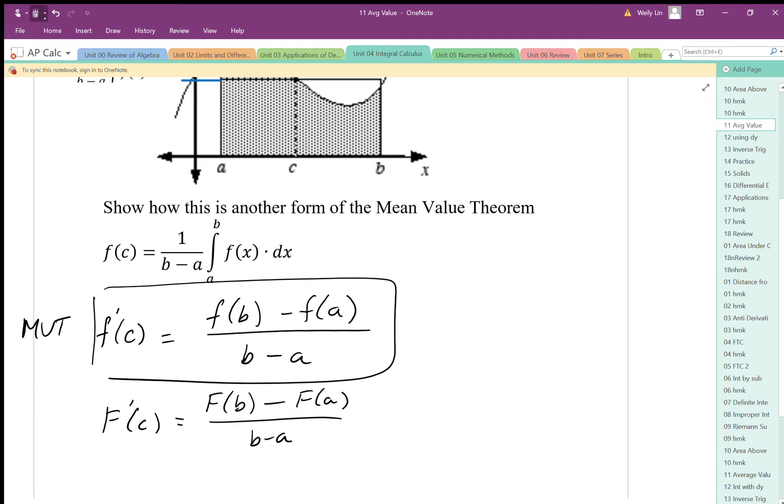I'm going to be able to generate that very easily here. Because I can say that f prime, let's say that this is going to be big F. This is the average value, so big F of c.